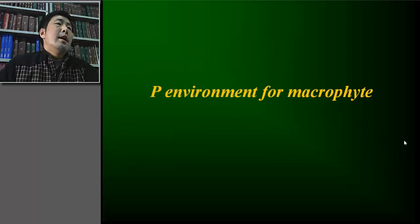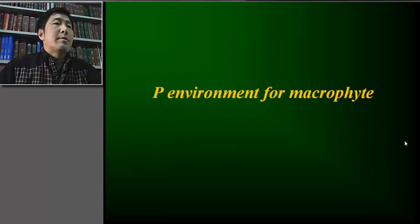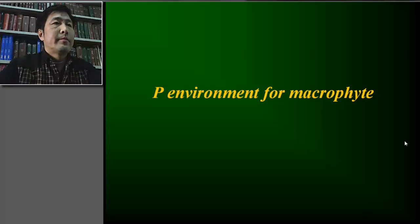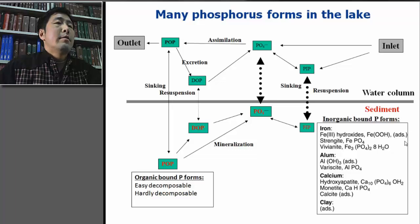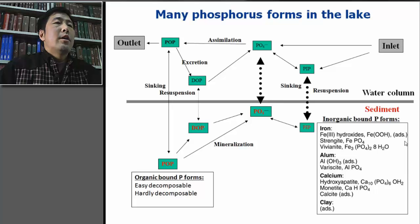First, let me describe the phosphorus environment for macrophyte life. Phosphorus is an important element in lake ecosystems. In natural lakes, phosphorus has many different forms. Some forms are easily utilized by biota, while others are difficult to be used. These are mainly found in the sediment.